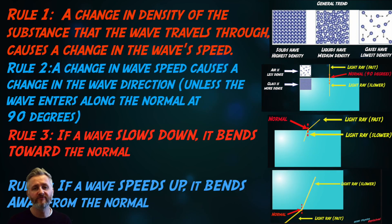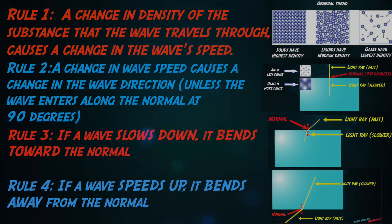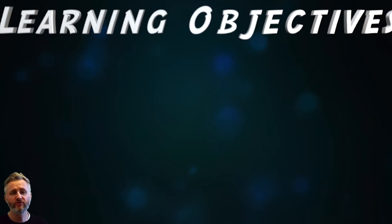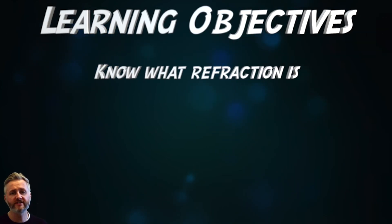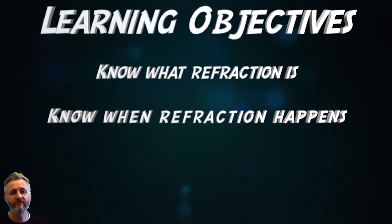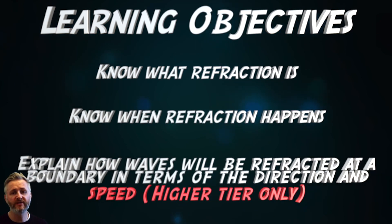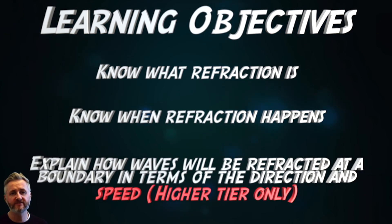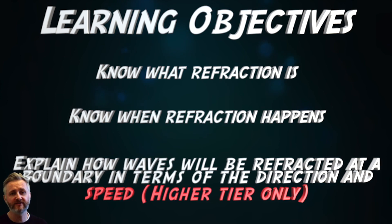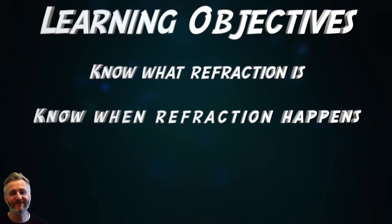Here's a summary of the four rules to help you understand refraction. You should now know what refraction is, know when refraction happens, and be able to explain how waves will be refracted at a boundary in terms of direction and speed — higher tier candidates only. I hope this video was helpful. See you in the next one.